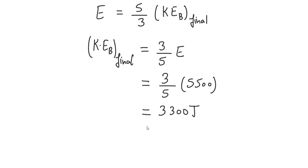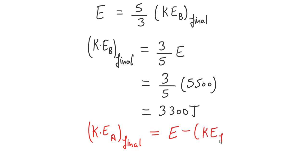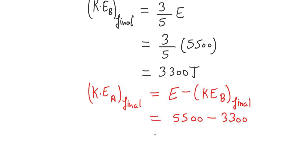Now we solve for the final kinetic energy of A: KE_a equals E minus KE_b. Substituting the values, KE_a equals 5500 minus 3300, which gives us 2200 joules. Therefore, the final kinetic energy of particle A equals 2200 joules.